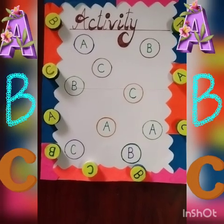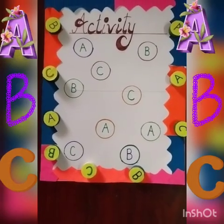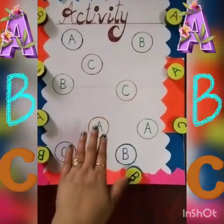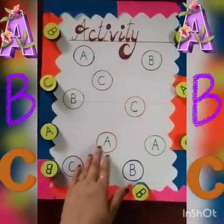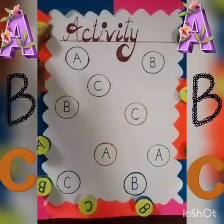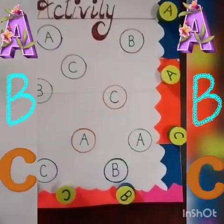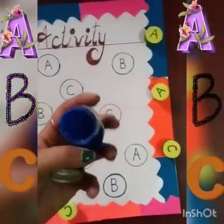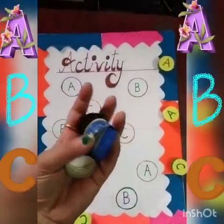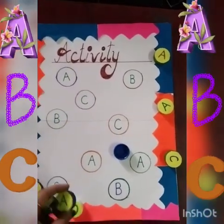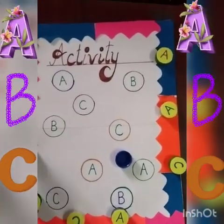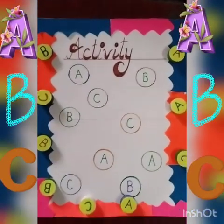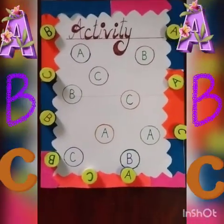Kids, today we will do an activity: match with the same letter. For this activity, we need a paper and some lids of bottles. These are lids. A lot of bottles are in your house, so you will have to write the alphabet with your parents' help and play the activity.